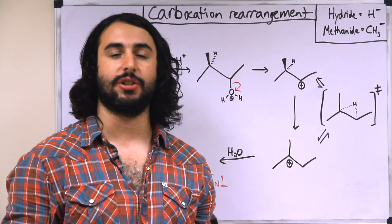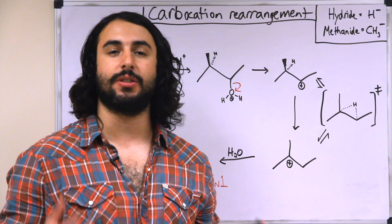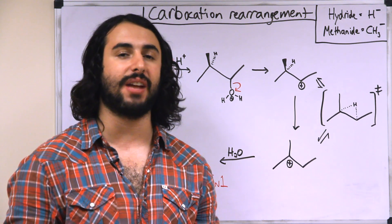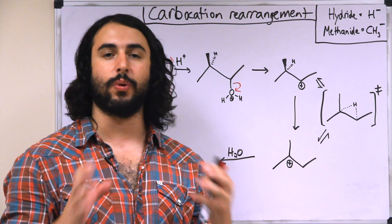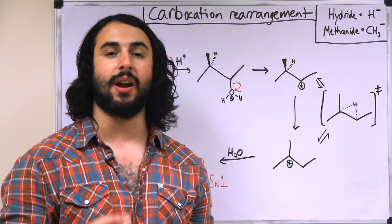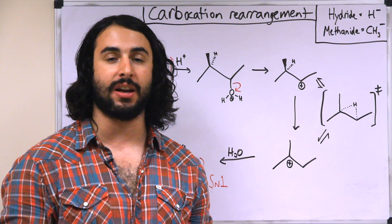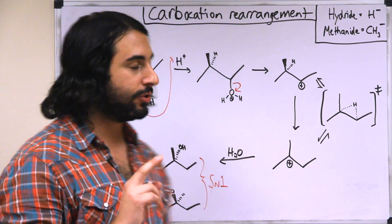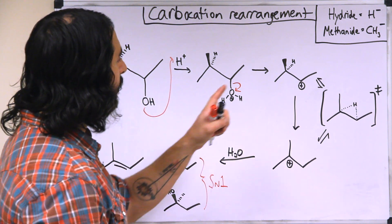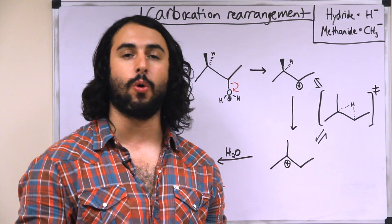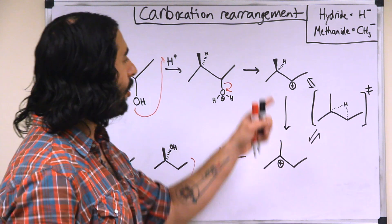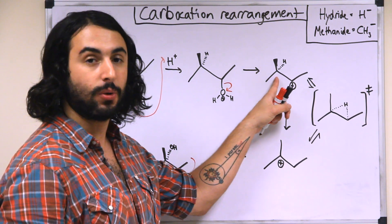We remember that due to hyperconjugation, a more substituted carbocation is a more stable one. And if a substrate is going to be able to rearrange so as to generate a more stable carbocation, it will do so. And there's two ways that it can do this. So let's say we have a secondary carbocation next to either a tertiary or quaternary carbon. So here's our tertiary carbon next door.